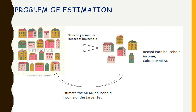It is not possible to reach each and every house and ask for their household income — for whatever reason it may be: time, money, limitations of labor, or anything else. One method we can use is to select a smaller, random subset of households from this larger set. We record each household's income, calculate the mean, and based on this mean we can actually estimate the household income of the larger set.